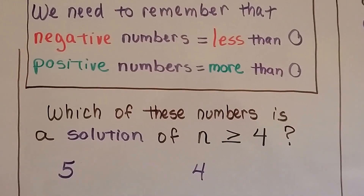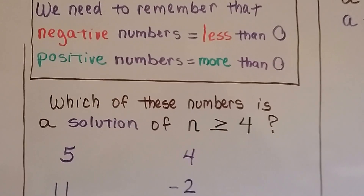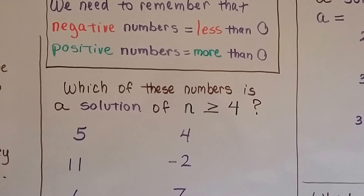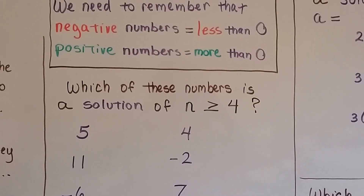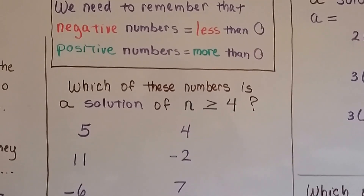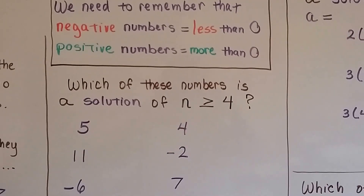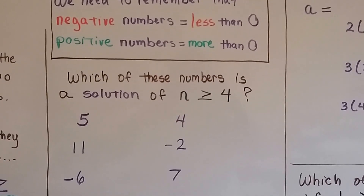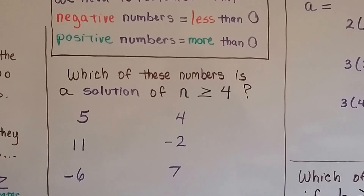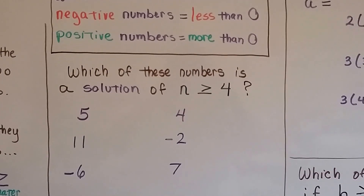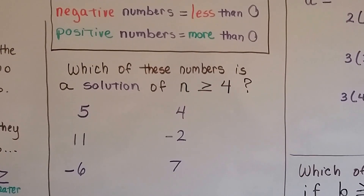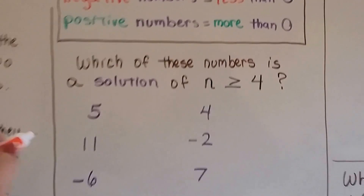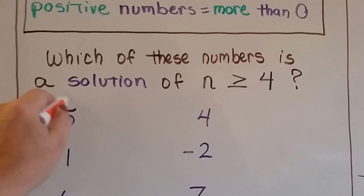Keeping that in mind, which of these numbers is a solution of n is greater than or equal to 4? Which one would make it true? Is 5 greater than or equal to 4? Yes, it is. So this would be a solution.